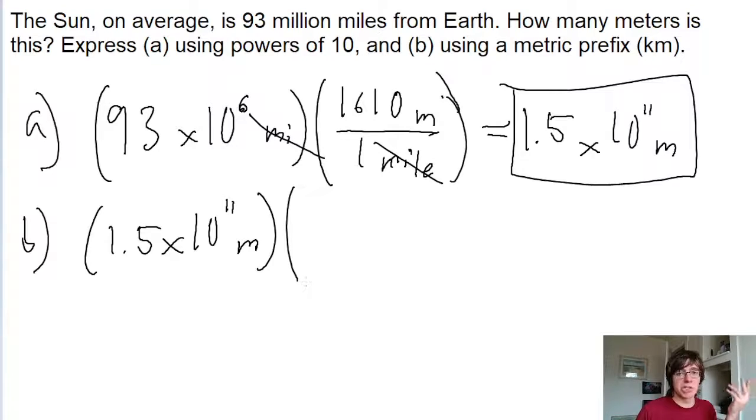Once again, we're going to use a chain link conversion, because 1 kilometer equals 1,000 meters. So we're converting into 1 kilometer—that goes in the numerator—and we're converting from 1,000 meters.